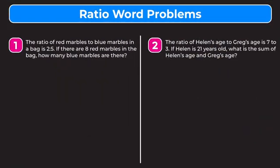In this video, we're learning how to solve ratio word problems. Looking at example one, it says the ratio of red marbles to blue marbles in a bag is two to five. I'm going to set up what's called a ratio table to solve these problems because I think it is easiest for most students.